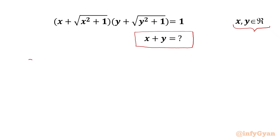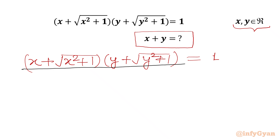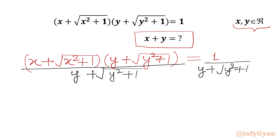Let's get started by writing our equation: x plus square root of (x squared plus 1) times y plus square root of (y squared plus 1) equals 1. Now I will divide both sides by y plus square root of (y squared plus 1). As we know, y plus square root of (y squared plus 1) cannot be 0.